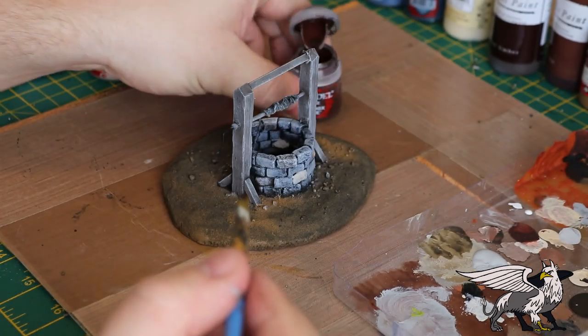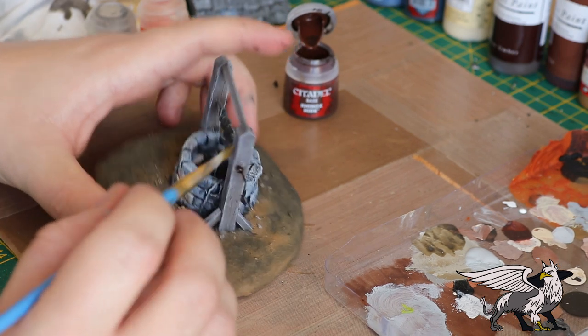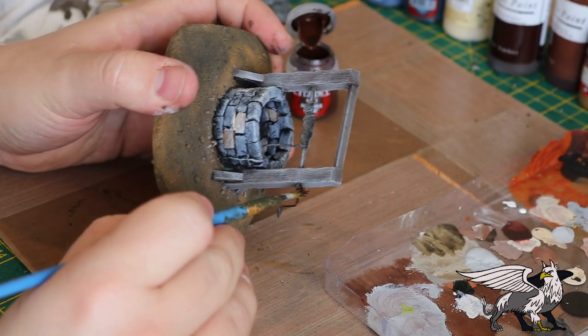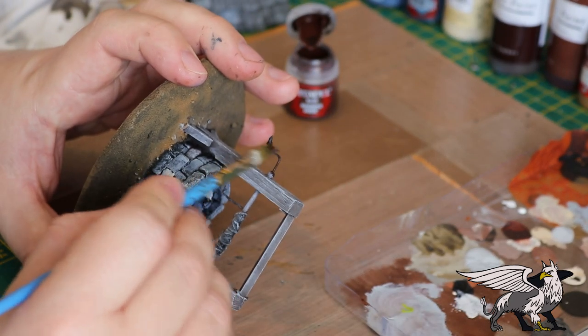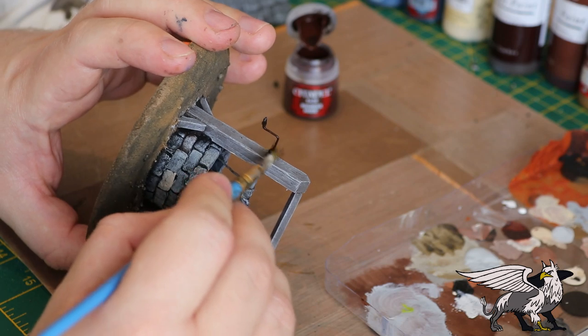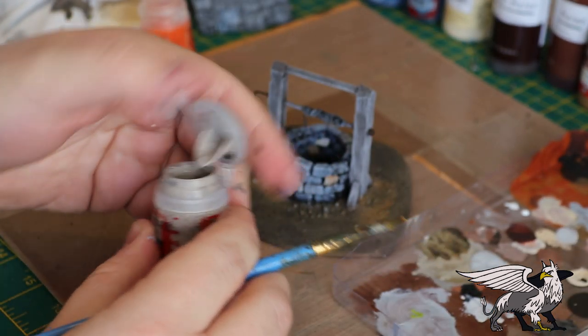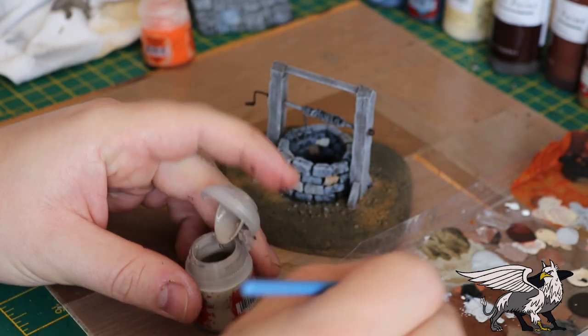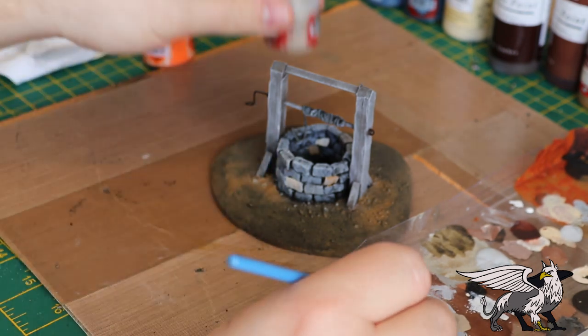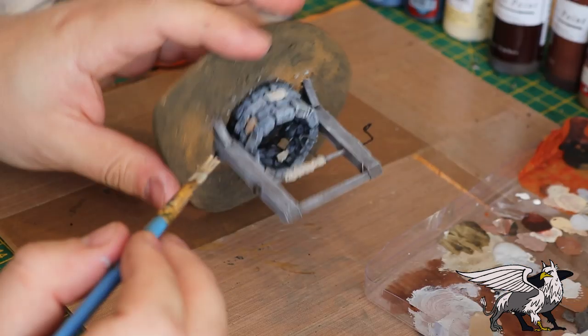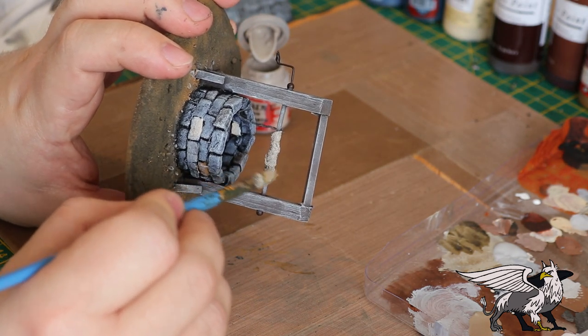This is some Rhinox Hide and I'm just going to go over the ironwork, the spindle handle and the craft beads on either end. So this is going to be like a rusty undercoat. And then I'm using some Rakarth Flesh for the rope. Needed to water it down quite a bit, so I just added Rakarth Flesh to all the rope.